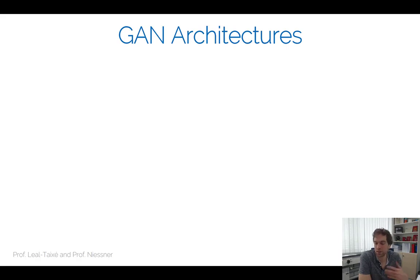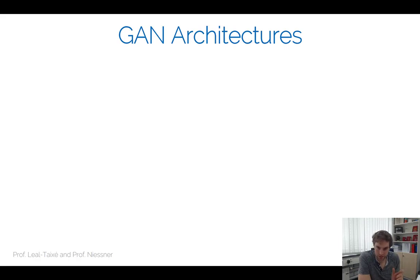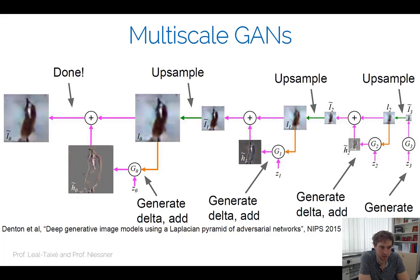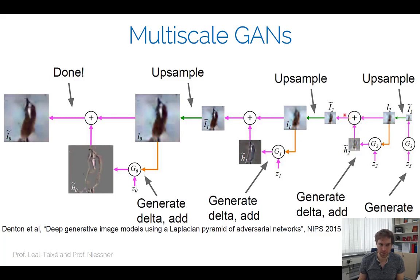Generating high-resolution images has been one of the core challenges in GAN research. One adopted approach is multi-scale optimization: you start with a low-resolution generator that takes random variable z as input, generates a low-resolution image, upsamples it, then another generator adds detail on top of that image, upsamples again, adds more detail, and so on.